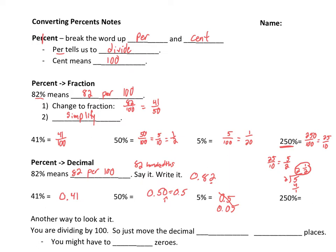250% is 250 hundredths. Now, that's a little harder to do. You can't really do that. We could also say this is 2 and 50 hundredths. So, 2.50 or 2.5. 2 and 5 tenths.